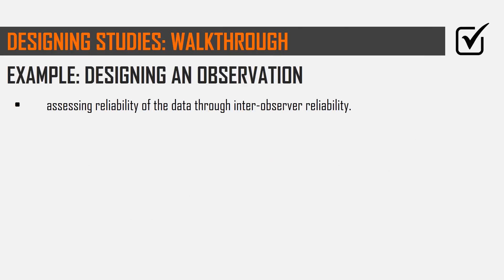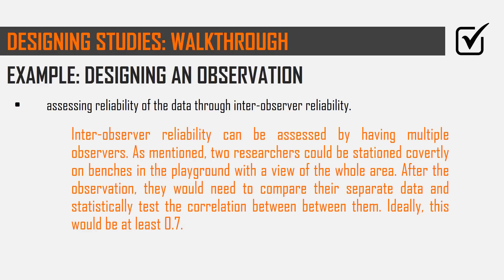The next point is assessing reliability through inter-observer reliability. They've told us specifically to talk about inter-observer reliability, so we just need to explain how that's going to work. The key point is you're going to have more than one observer. Practically, two researchers could be stationed covertly on benches in the playground with a view of the whole area — I talked about this in the design earlier — so I just need to add that it's going to be two.